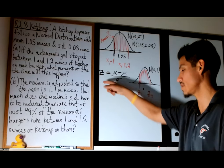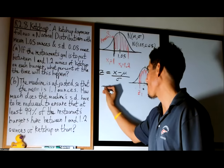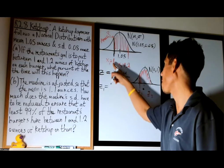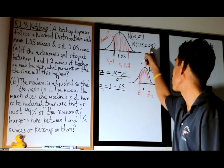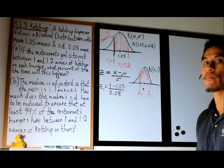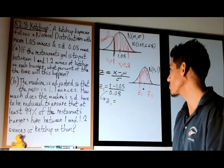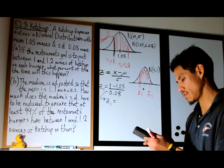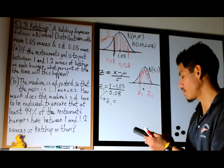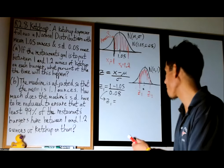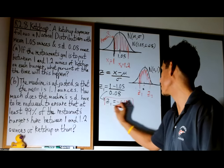We want to use z values so we can use the normal table and find the areas corresponding to these. So let's find z1 and z2 by solving the z-score equation. z1 equals x1 minus mu over sigma, which is 1 minus 1.05 divided by 0.08. That gives us negative 0.625.